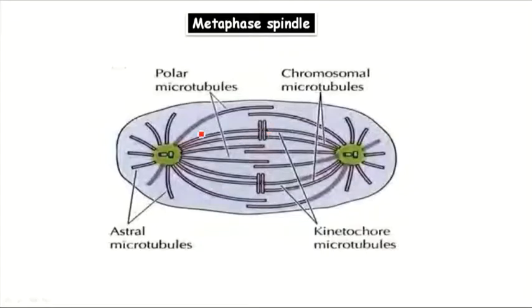The polar microtubule overlaps in the center of the cell. The astral microtubule radiates from the central zone towards the cell periphery.